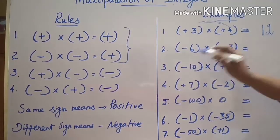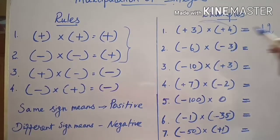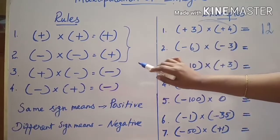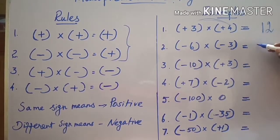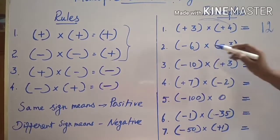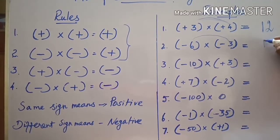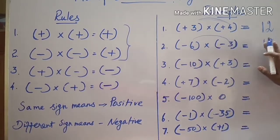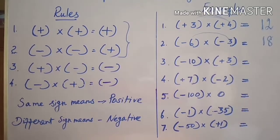Second sum: we have two negative integers. When multiplying two negative integers, the rule says signs are the same, so the answer will be positive. Multiply the numbers: six into three is eighteen. Minus into minus gives plus — both signs are the same, so the answer is positive eighteen.